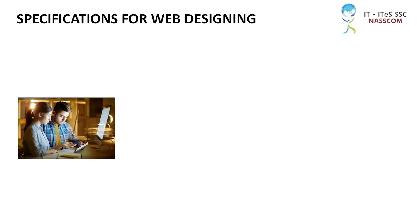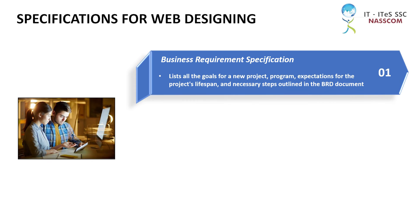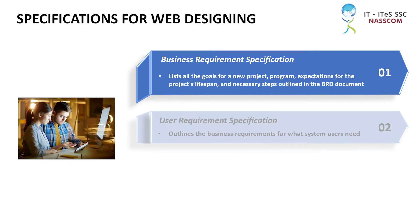The specifications for web designing are of three kinds. 1. Business Requirements Specification: The official report known as a Business Requirements Document lists all the goals for a new project, program, expectations for the project's lifespan, and necessary steps outlined in the BRD document.